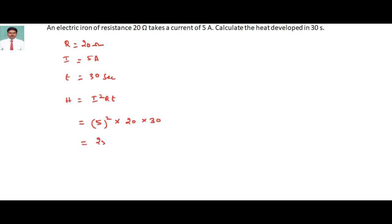That equals 25 into 20 into 30, which equals 15,000 Joules or 15 kJ. The heat developed in 30 seconds is 15 kJ.